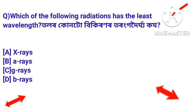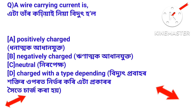Next question: which of the following radiations has the least wavelength? Tolar kuntu bikiranar taranga doigha kam? Answer: gamma rays — ji reisor bikiranar taranga doigha haba tukoy kam hoi. Next question: a wire carrying current — eta taranga kohi yae niya bidhut hul — is natural or neutral, nirapekho bidhut buli kwa hai.